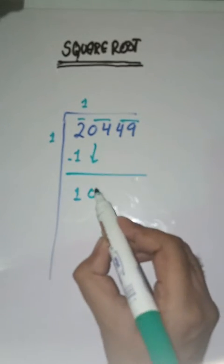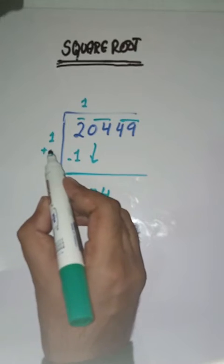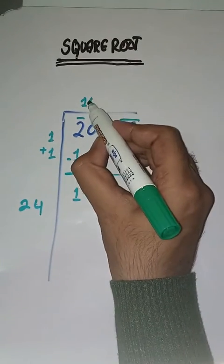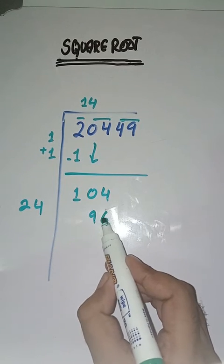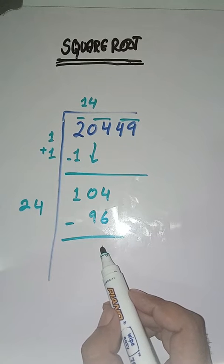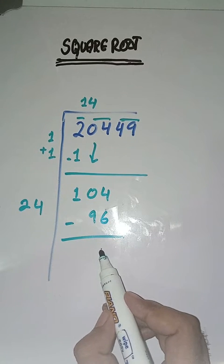Next pair is 04. इसको हम नीचे ले आएंगे. यहां पर हम करेंगे 1 plus 1 which is equal to 2. Now we will take 4. 24 fours are 96. Minus करेंगे, मारे पास आजएगा 14 minus 6 is equal to 8.